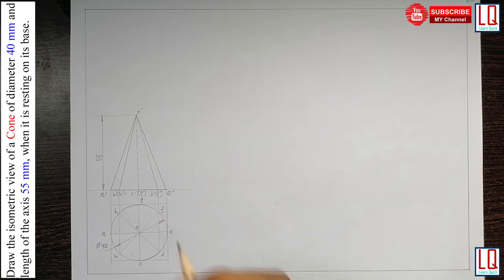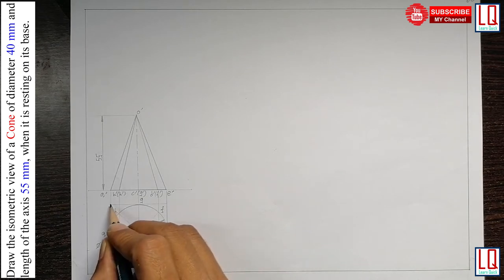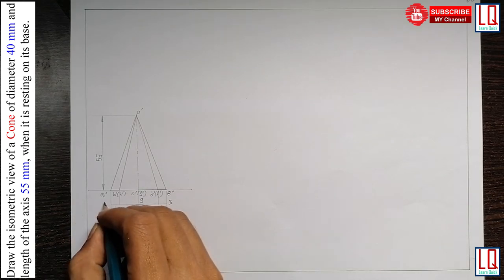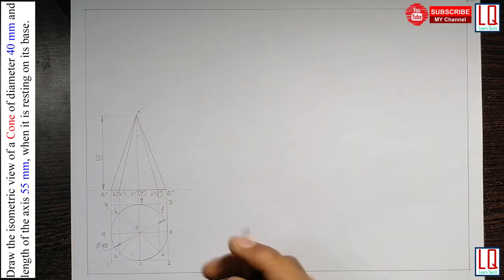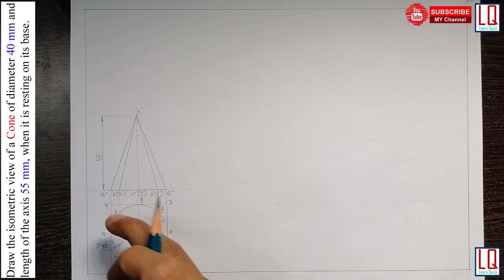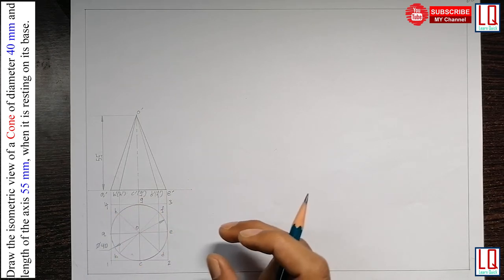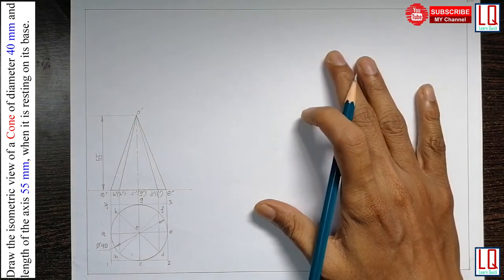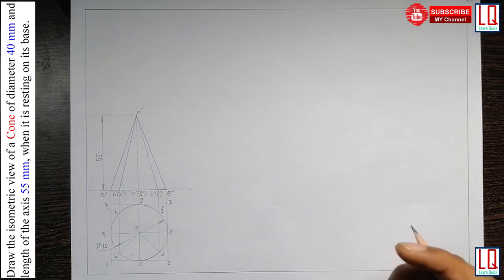Now, in the first step, I have to enclose the top view of the solid with 4 lines. And I name all the corners as 1, 2, 3 and 4. So, now I have to measure the length, breadth, and height of the cone to develop the box which is going to enclose this cone.